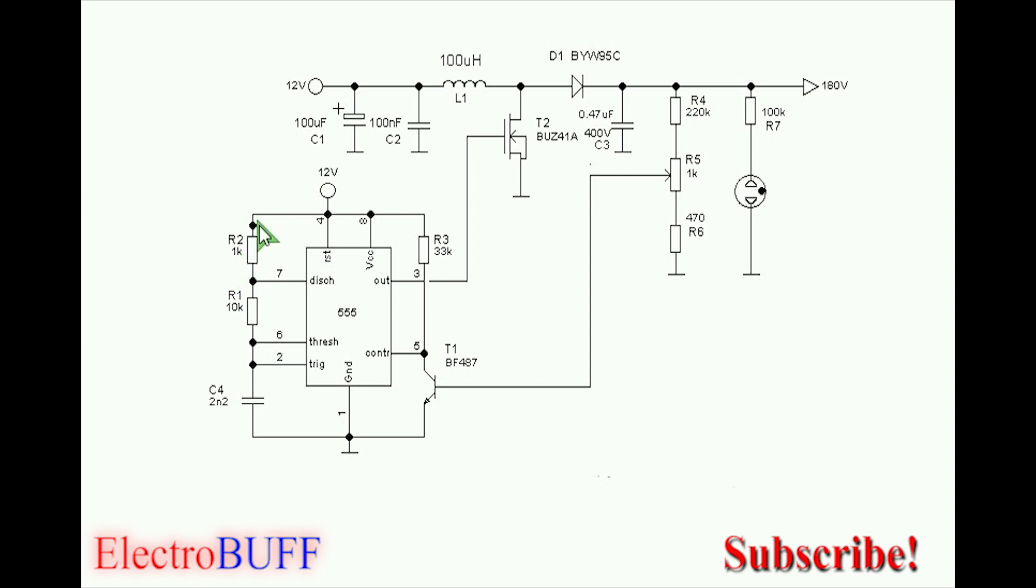Basically what this does is the capacitor will charge through R2 and R1, then discharge through R1. The output at pin 3 is high when the capacitor is charging and low when it's discharging. This sets the duty cycle of the output at pin 3 at about 55 percent.